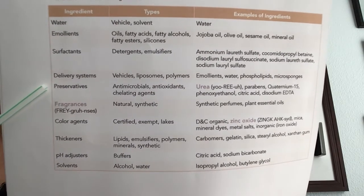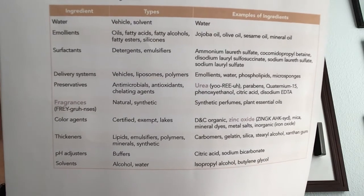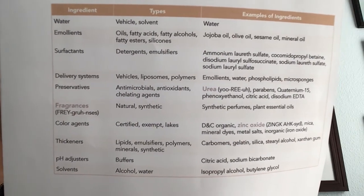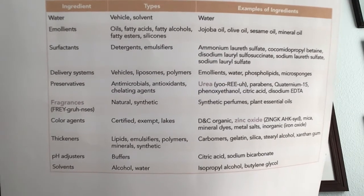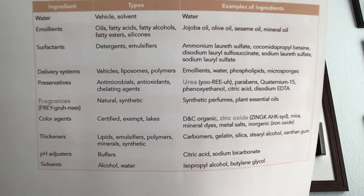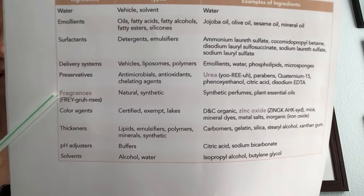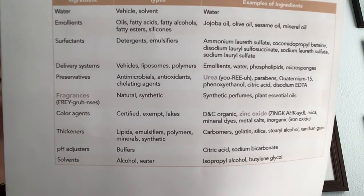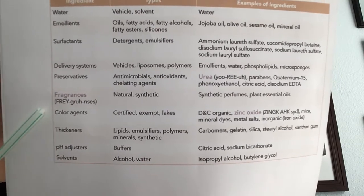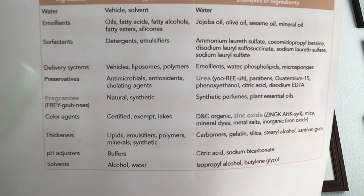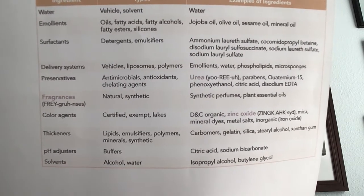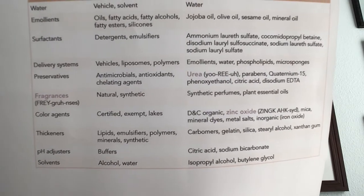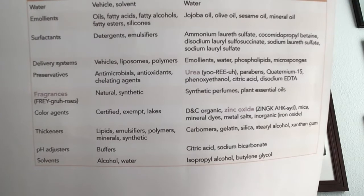Preservatives are antimicrobial, antioxidant, and chelating agents. Examples include urea, parabens, quaternarium-15, phenoxyethanol, citric acid, and disodium EDTA. Fragrances can be natural or synthetic — synthetic perfumes use plant essential oils. Color agents — you want to know these as well, they have been on boards. Examples include certified or certified-exempt and lakes, D&C organic, zinc oxide, mica, mineral dyes, metal salts, and inorganic ones like iron oxide.